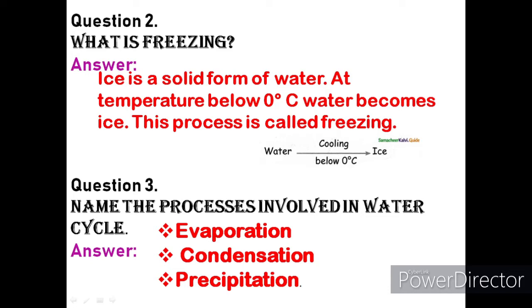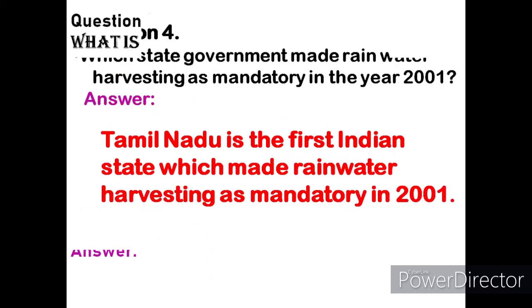Question 3: Name the processes involved in the water cycle. Answer: Evaporation, condensation, and precipitation.